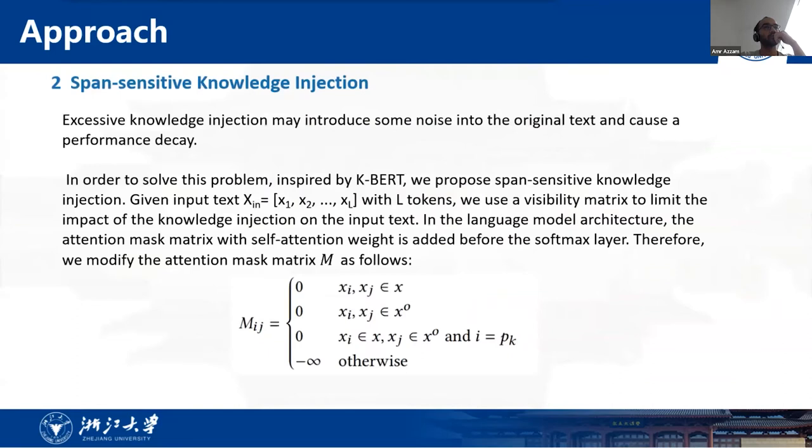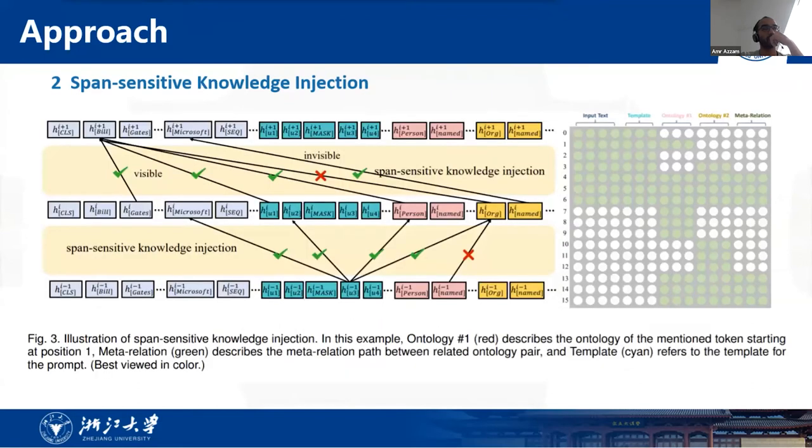Since excessive knowledge injection may introduce some noise into the original text, in order to solve this problem, inspired by K-BERT, we propose span-sensitive knowledge injection. Given input text X with L tokens, we use a visibility matrix to limit the impact of the knowledge injection on the input text. In the language model architecture, the attention mask matrix with self-attention weight is added before the softmax layer. Therefore, we modify the attention mask matrix. This figure illustrates the span-sensitive knowledge injection. Ontology 1 describes the ontology of the mentioned token starting at position 1, which can be viewed as auxiliary prompt, and template refers to the original template for the prompt.